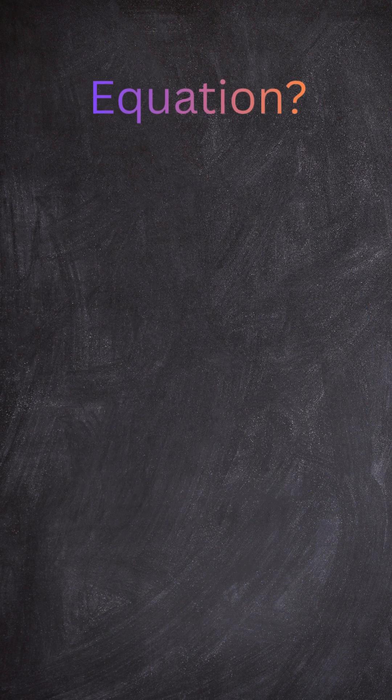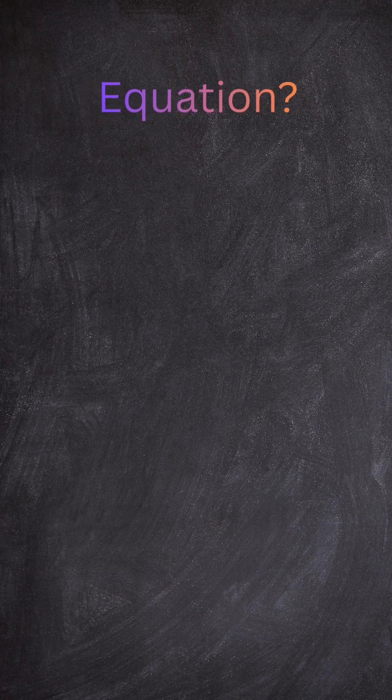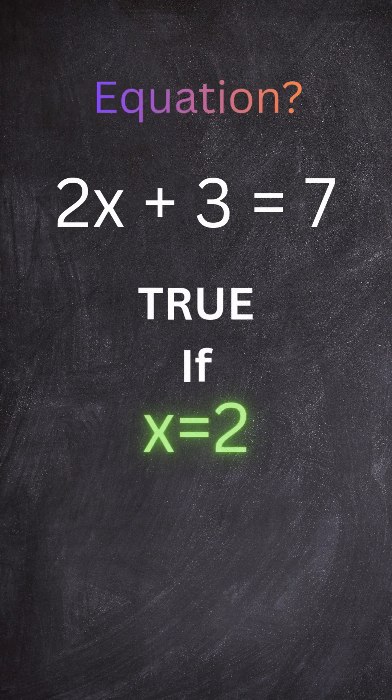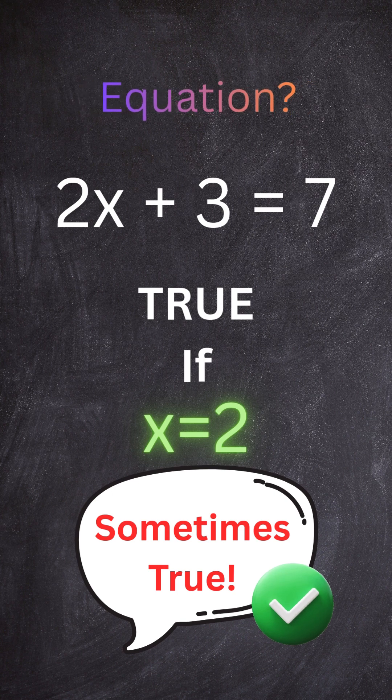An equation is like a question. It's true only for some values. For example, 2x plus 3 equals 7. That's true only when x equals 2. So, an equation is sometimes true.